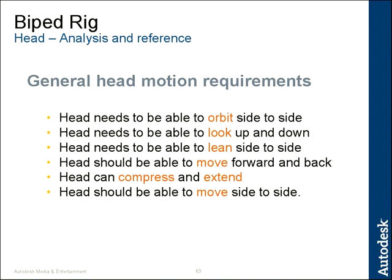Based on looking at those reference clips, there are some general head motion requirements we can note. First, the head needs to be able to orbit side to side — you have to be able to look left and right, really orbiting all the way to each side. You need to be able to look up and down, lift and lower the head. You need to be able to lean side to side — kind of the dog tilt look. You should also be able to move the head forward and backwards, as Carlos did in the wheelchair. The head can also compress and extend — bringing the head down into the shoulders and then extending it out as you push up.